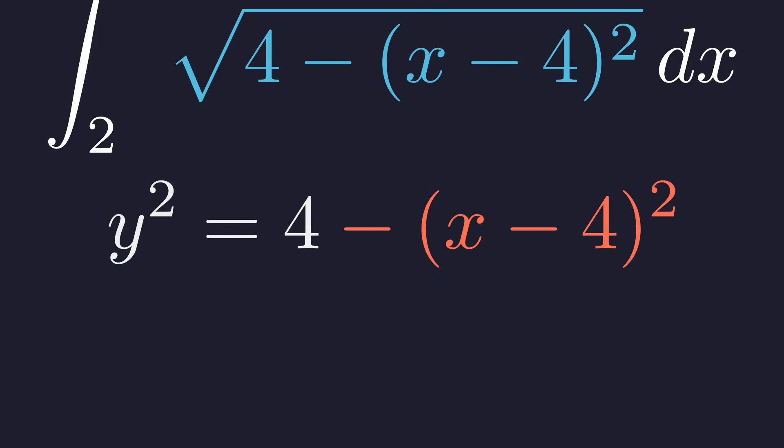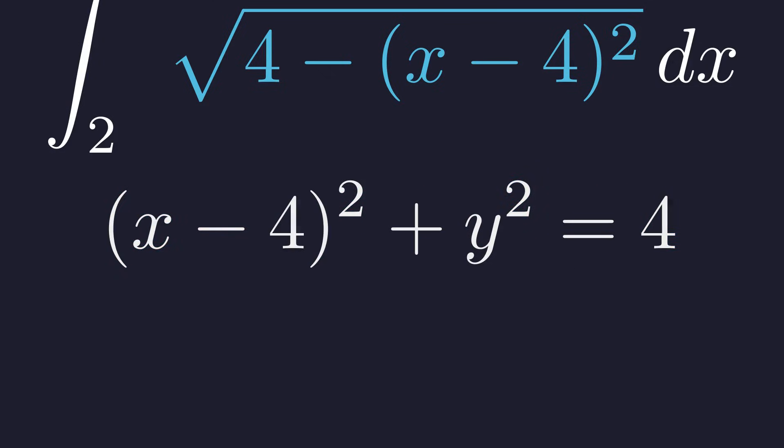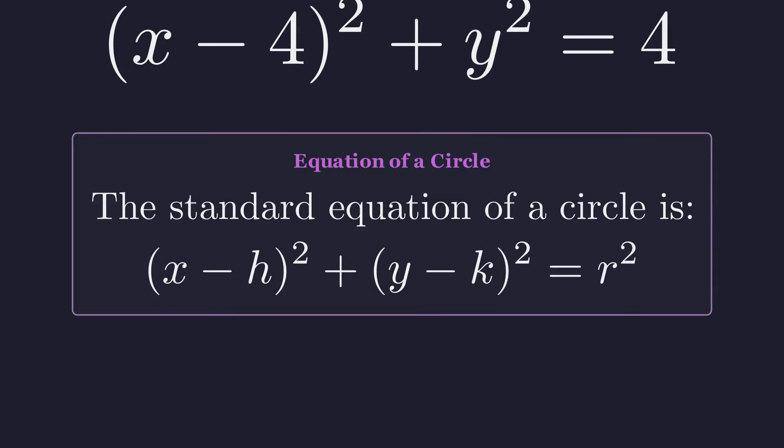Now, let's rearrange the equation by moving the x term to the left-hand side. Adding the x term to both sides, we get the quantity x minus 4 squared plus y squared equals 4. This is unmistakable. This is the standard equation of a circle, where the point h is the center and r is the radius. By comparing our equation to this standard form, we can identify its properties.